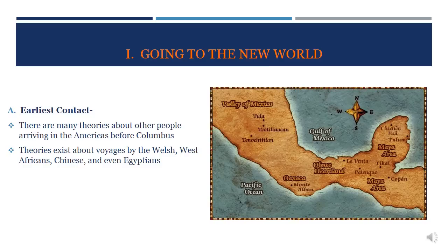There are a lot of theories from historians, anthropologists, and archaeologists about people who arrived in the Americas prior to Columbus. Some theorize there were voyages by the Welsh, by West Africans, by the Chinese, and even as far back as the ancient Egyptians. We're going to look in more depth at each one of these claims.